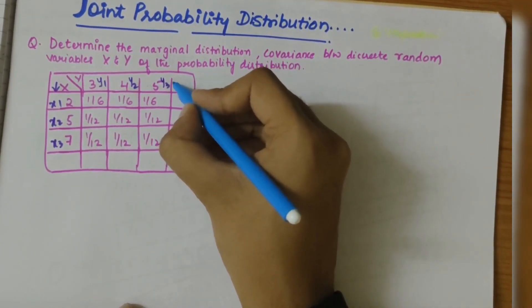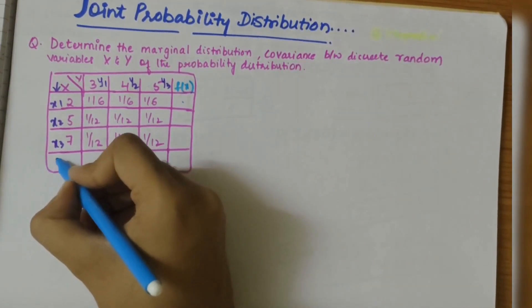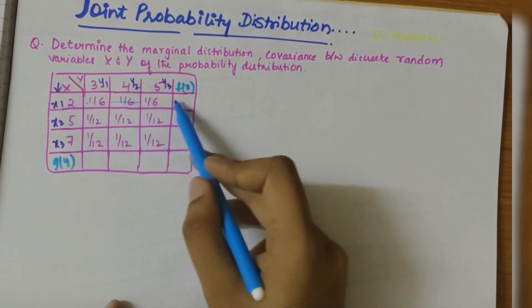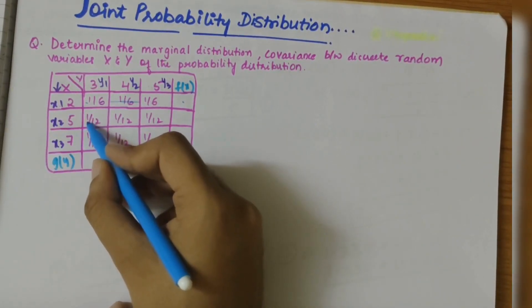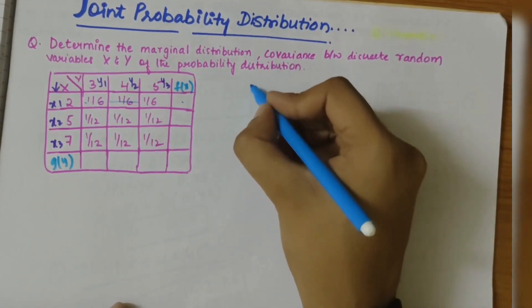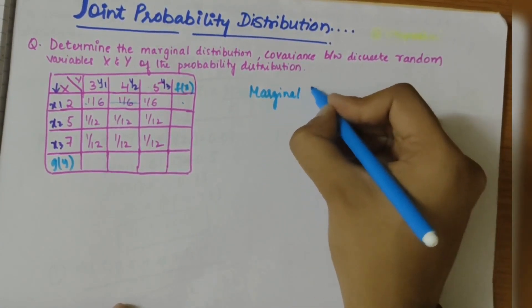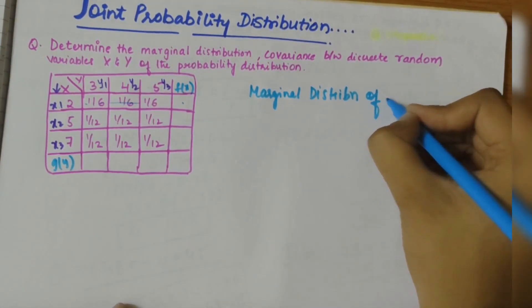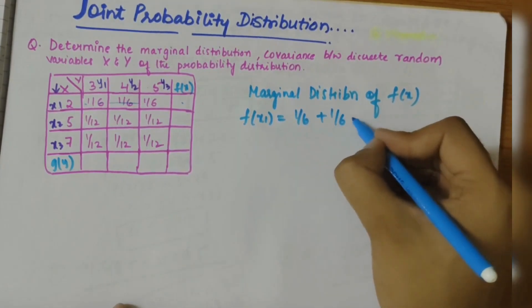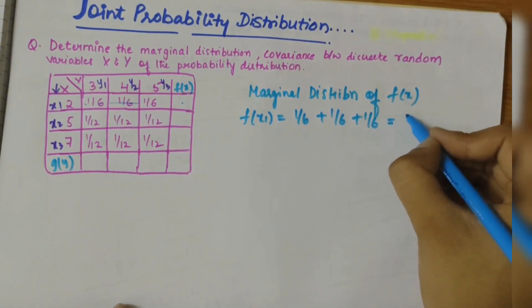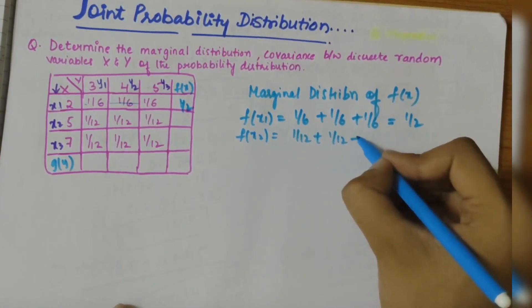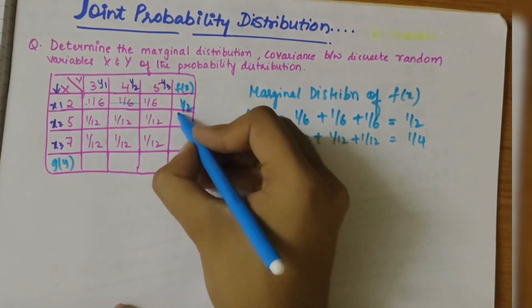Let's see how to find the marginal distribution. Marginal distribution is the sum of all the horizontal or vertical columns. We'll write it as f(x) and g(y). When we add all the adjacent terms of x1, we get f(x1). For f(x2), we add 1/12 + 1/12 + 1/12, and for f(x3) we add 1/12 + 1/12 + 1/12 + 1/12. So f(x1) = 1/6 + 1/6 + 1/6 = 1/2, and f(x2) = 1/12 + 1/12 + 1/12 = 1/4.